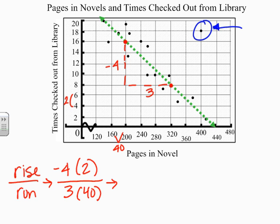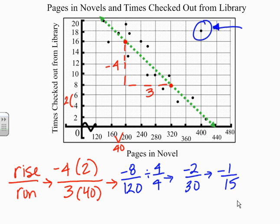Now we're going to multiply that, so we get negative eight divided by 120. We can divide both of these by four. Eight divided by four is two and 120 by four is 30. We can do it again because two can go into 30 - negative one over 15. So what this is telling us is that for every 15 pages in a book that gets added, one less person will check it out of the library. That's a pretty substantial thing to know and how it represents.